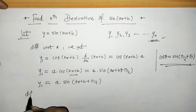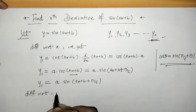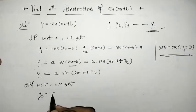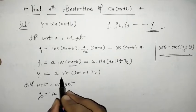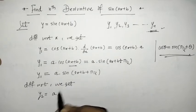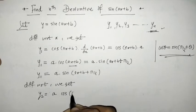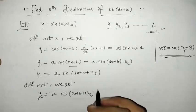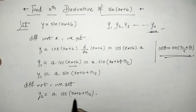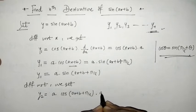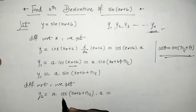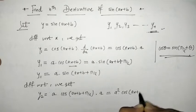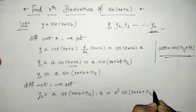Now differentiating y1 with respect to x, we get y2. The derivative of sin is cos, so we get a (constant) times cos(ax + b + π/2) times the derivative a. So y2 = a²·cos(ax + b + π/2).